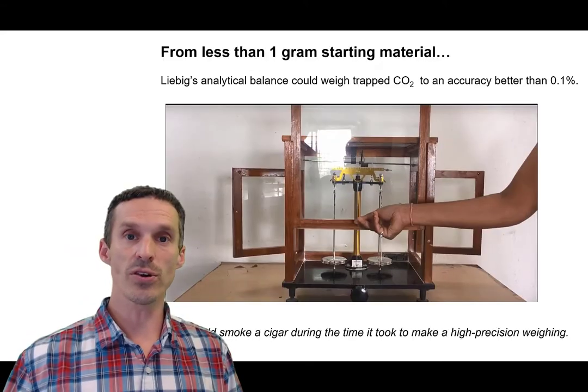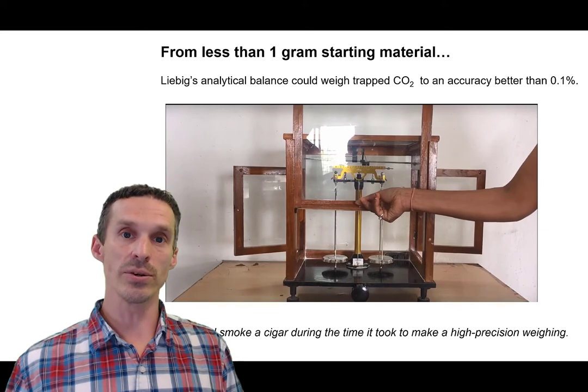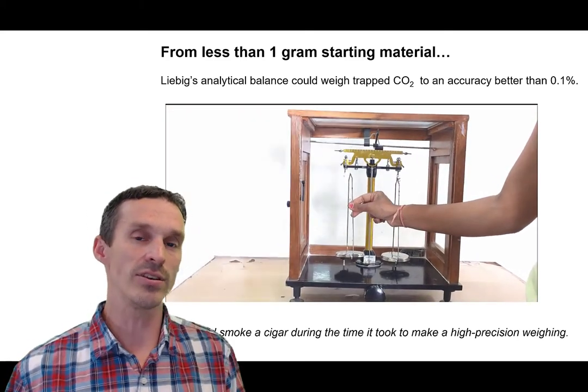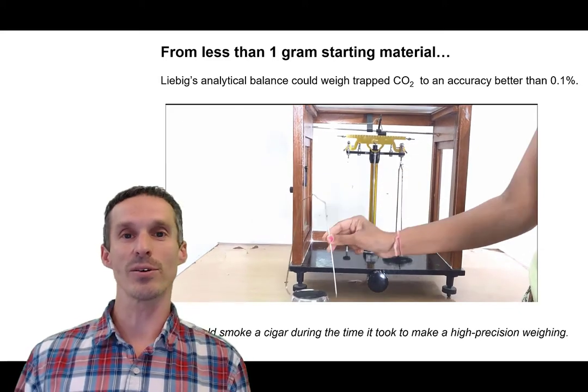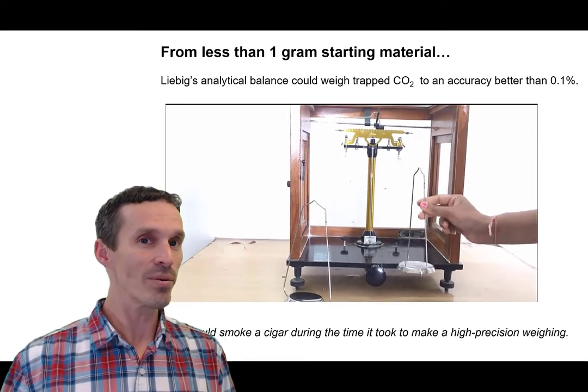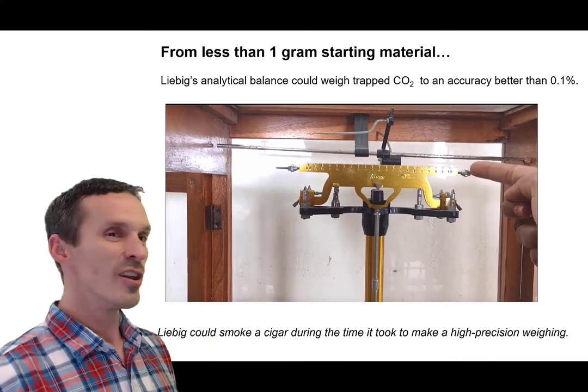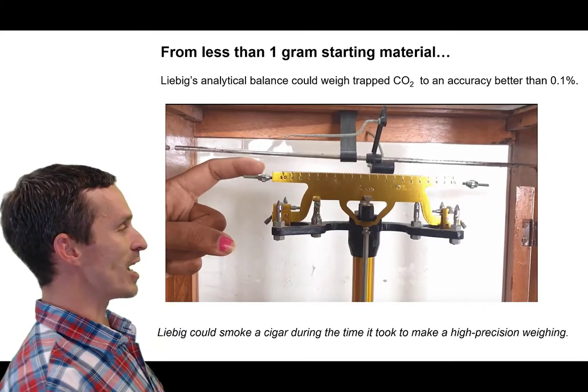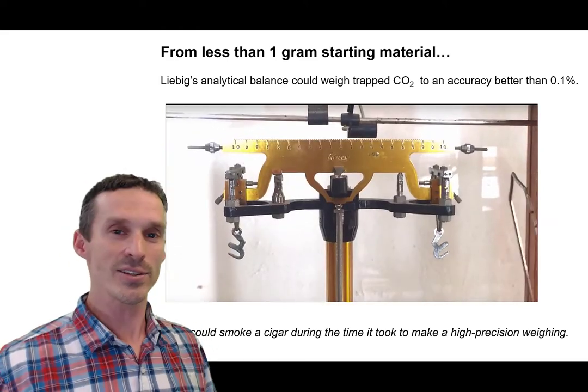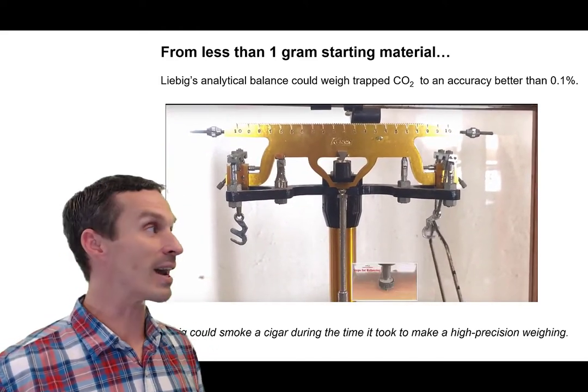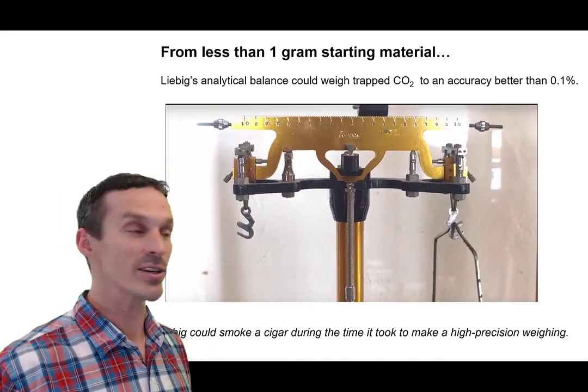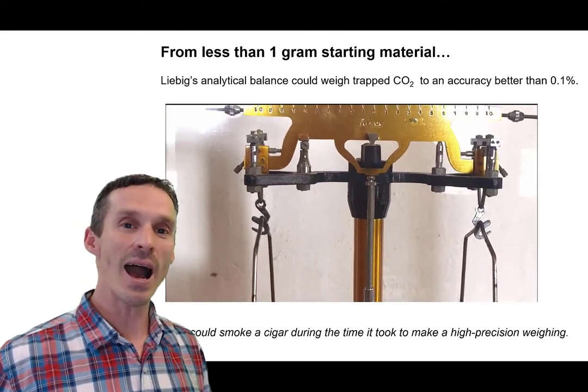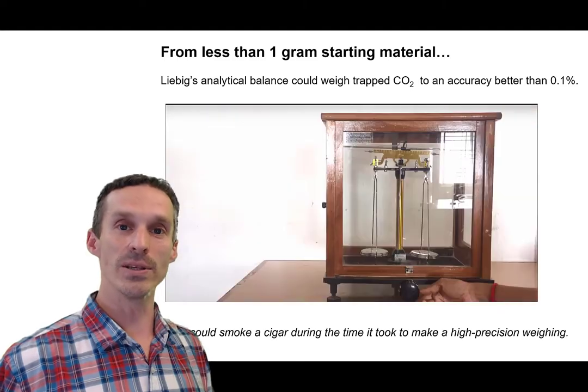So once you've trapped the CO2, what you need to do is weigh it. Now remember the dates that we're dealing at. This is like the early 1800s. So the analytical balances that were available at the time were pretty old fashioned. So these were the types of machines you really had to be patient about. You can imagine that your sample would be put up on a scale and it's just sort of weighing teetering back and forth because it's an old fashioned balance. So this is the type of instrument that would literally take hours to perform a single measurement on.